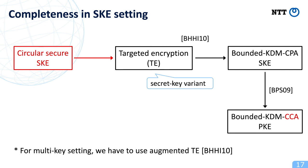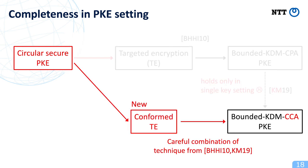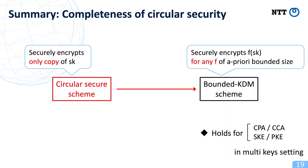By combining this construction with some previous results, we can obtain circular security's completeness in the secret key setting. In order to obtain completeness of circular security in the public key setting, we introduce a new primitive called conformed targeted encryption, and construct bounded KDM-CCA-secure PKE directly from circular-secure PKE without going through bounded KDM-CPA-secure one. For this result, please see our paper. This is the end of my talk. Thank you for your attention.